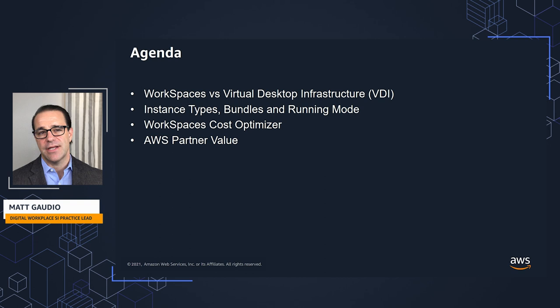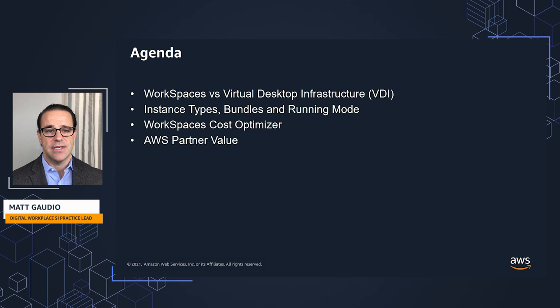Here's the agenda. We're going to cover a few things. We'll start off comparing alternatives to desktop as a service in the form of WorkSpaces, looking at what virtual desktop infrastructure might cost both on-premises and how it would look in AWS, and look at some of the reasons why you'd end up here before we get into optimizing your consumption. Then we're going to get into the cost variables for Amazon WorkSpaces.